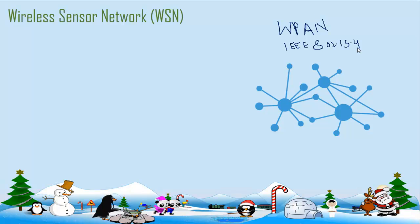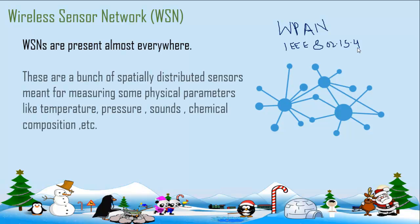Wireless sensor networks are slowly and gradually becoming a part of our daily lives. You can see them present everywhere — in hospitals, in cameras, in schools, and in places meant for agricultural purposes.